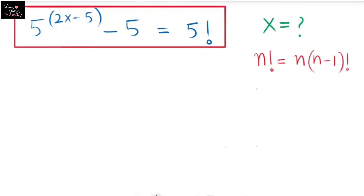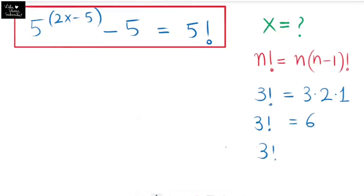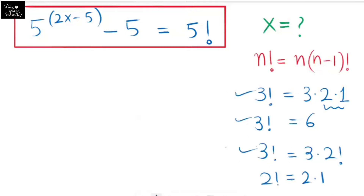I'm going to write the factorial of 3. As I said, multiplication of one number with the number below it — so 3 times 2 times 1 gives us 6. So 3 factorial equals 6. We can also write it as 3 times 2 factorial, and since 2 factorial equals 2 times 1. In these three ways we can write the factorial of any number.